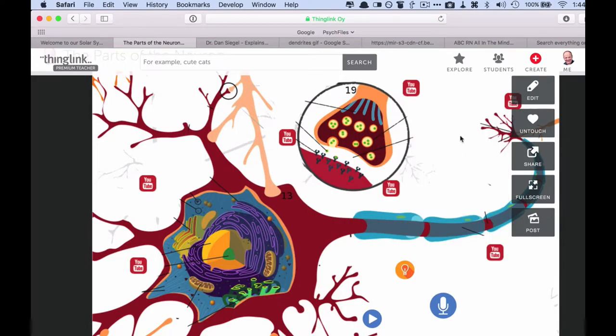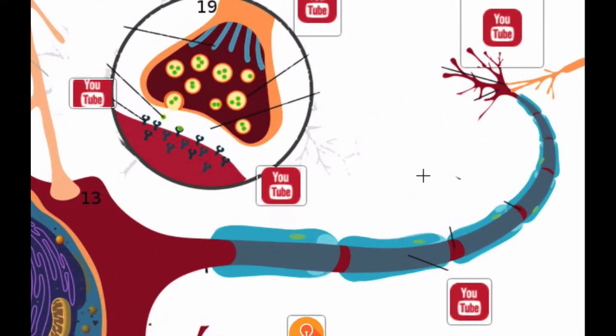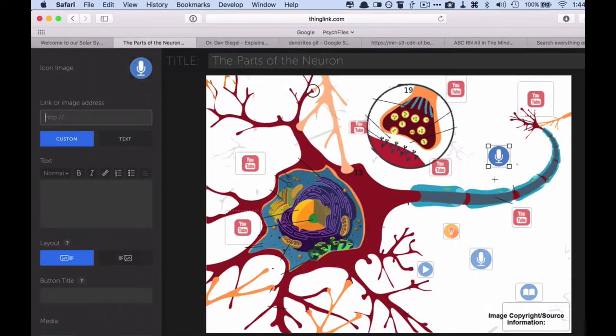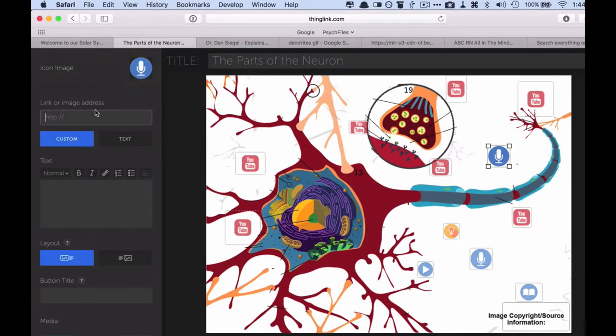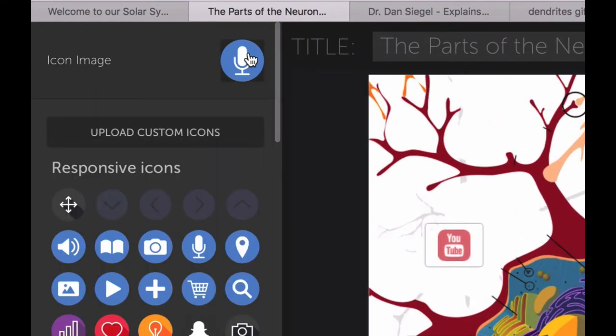So it's pretty easy to do. You upload your image, or you can link to an image, and then you just tap anywhere you want to put some media. So I'll put it there. Up comes this little editor on the left, and you can change the icons. If you wanted to put in a video, for example.